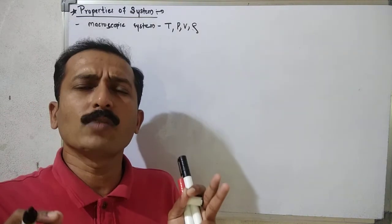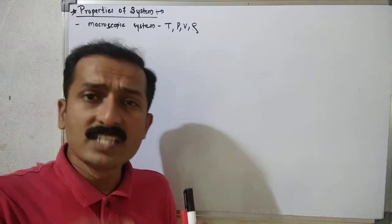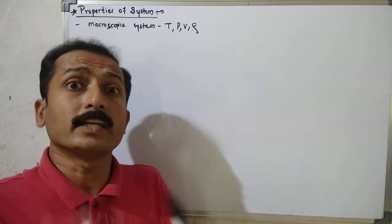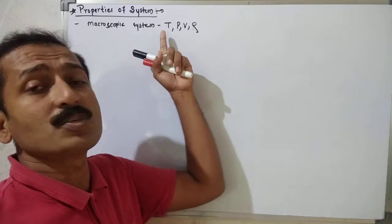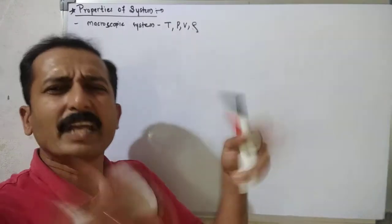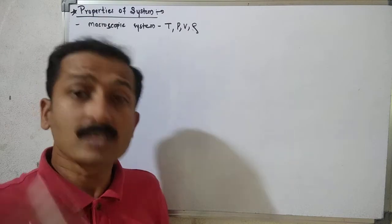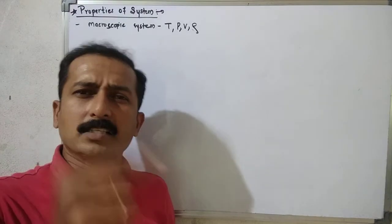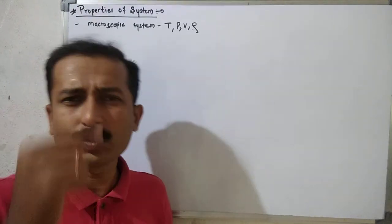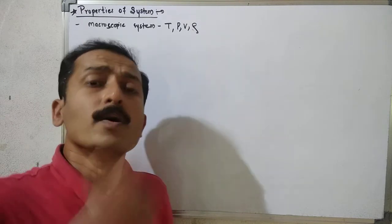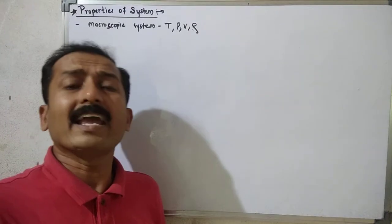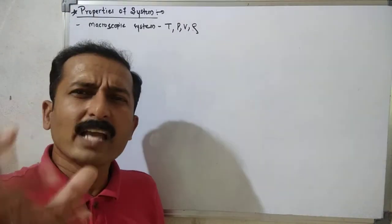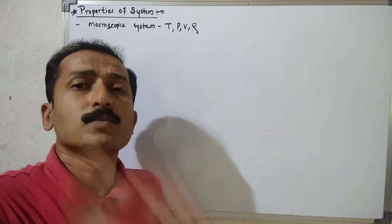The variables we use in thermodynamics include temperature, pressure, volume, density, and number of moles. These parameters describe the reaction mixture — the temperature, volume, pressure of reactants and products, how much pressure is developed, and how much heat is applied in the thermodynamic system.